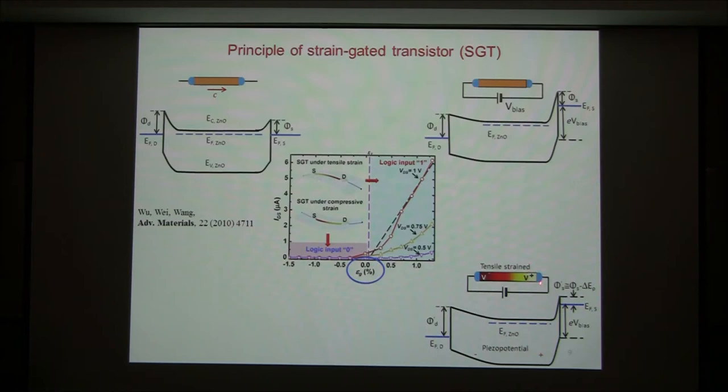We can create a positive polar charge here and negative polar charge here. This positive charge raises or lowers the local barrier here — lower the local barrier here helps the electron flow like this. Lower the barrier, the electron can flow easily here. That's why on tensile strain, the device is off.